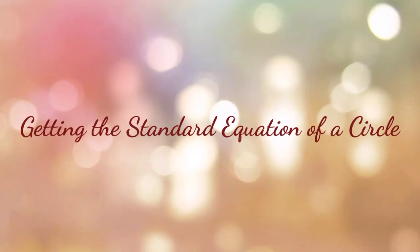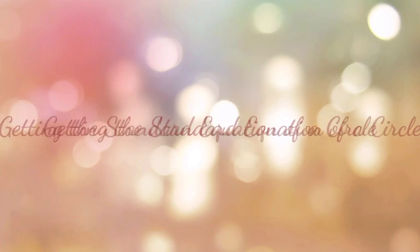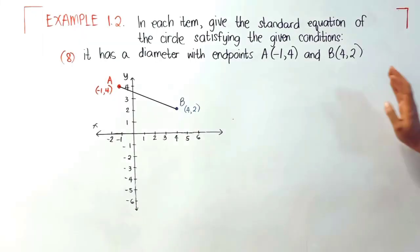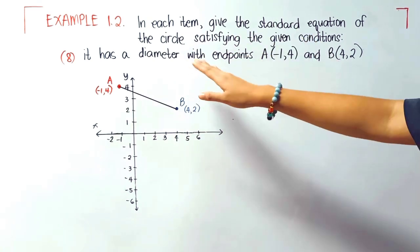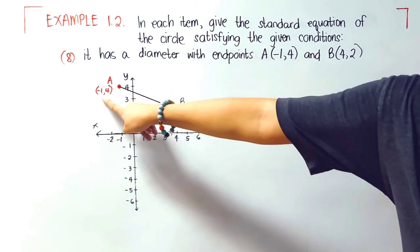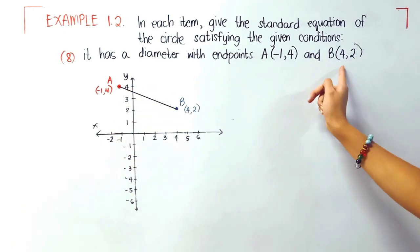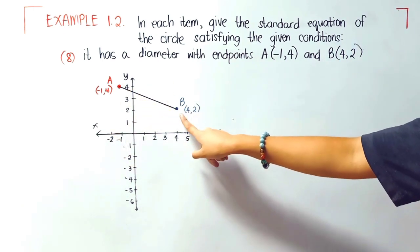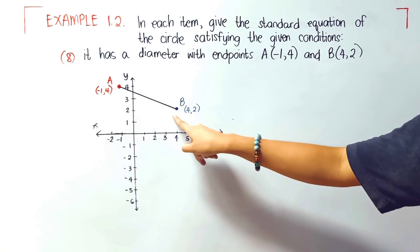We are still on getting the standard equation of a circle. We are now on problem A. It has a diameter with endpoints A(-1, 4), it's in this point, and B(4, 2), it's in this point.